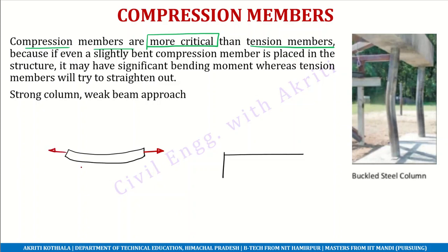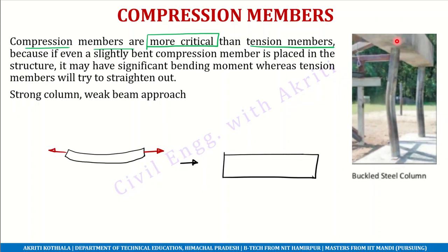Tension will try to make the member straight — that is the nature of tension, it tries to straighten the member. But compression tries to buckle the member, and when the member gets buckled, it gets uneven height and the chances of collapse increase.